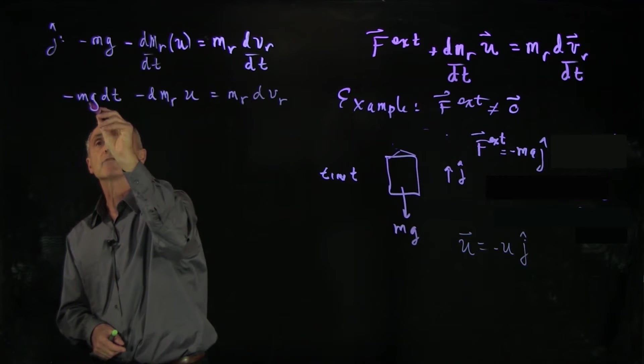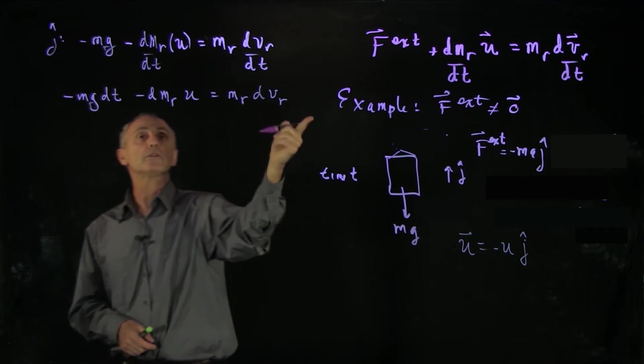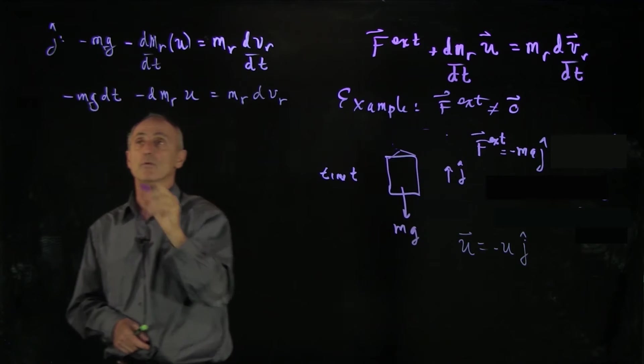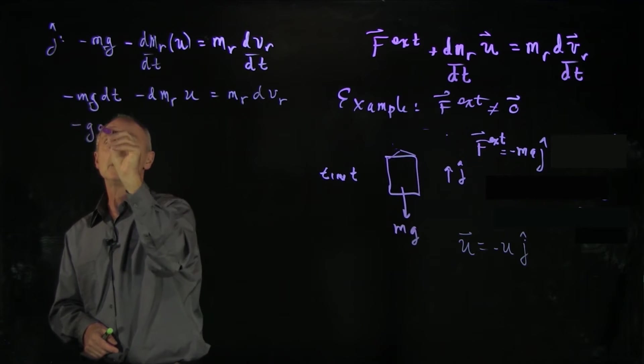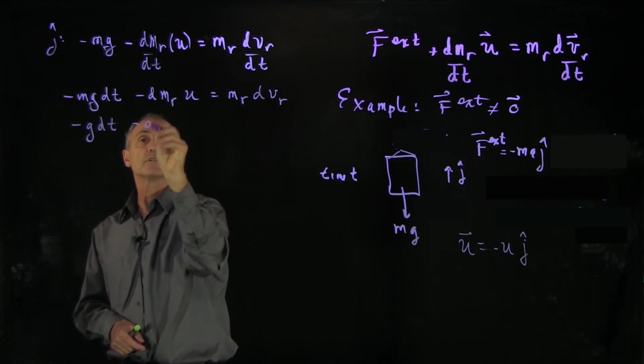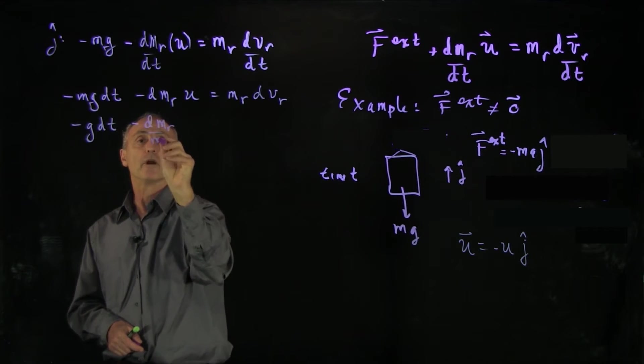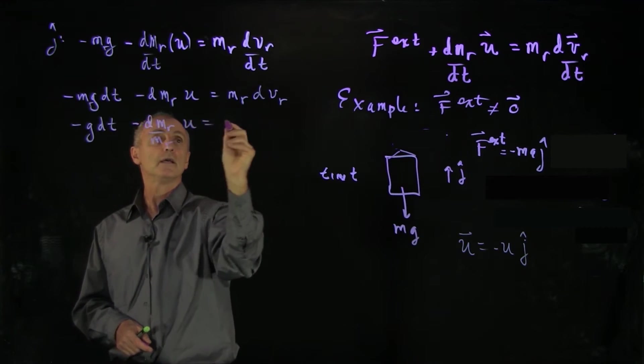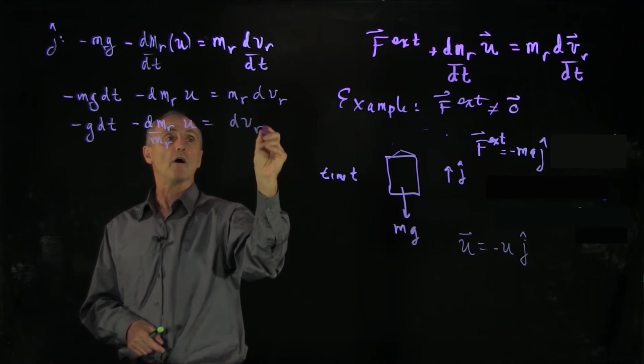And we have minus dmr times u equals mr dv r. And this is mass of the rocket. And now let's divide through by mass of the rocket. So we have minus g dt minus dmr over mr u equals dv r.